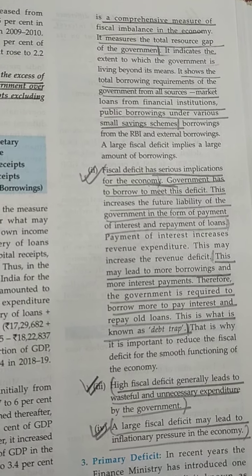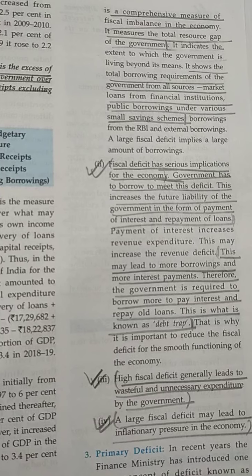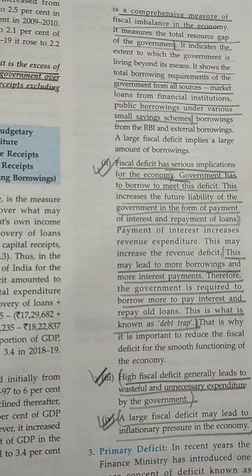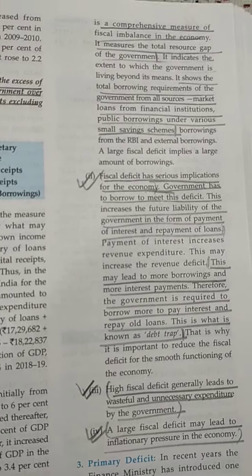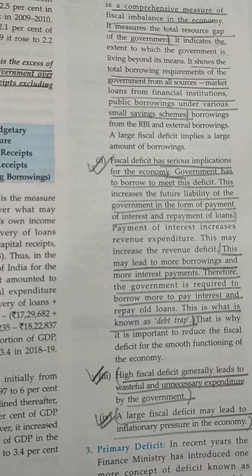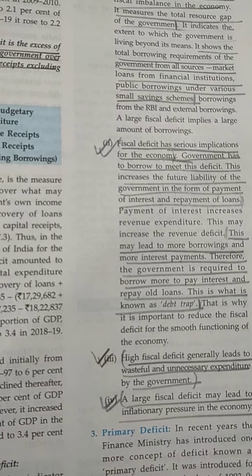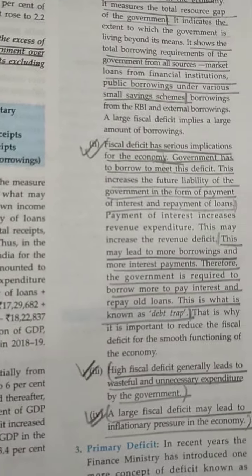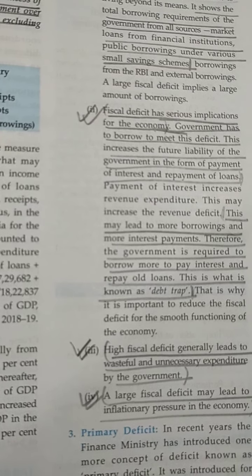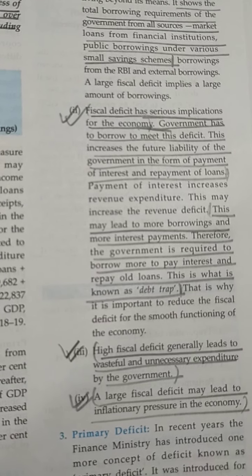The first implication of fiscal deficit is that it measures the total resource gap of the government. It shows that the government is borrowing a lot of money and indicates the various sources from where the government is borrowing. Fiscal deficit has serious implications — to meet the deficit, the government is going to borrow more and more money, and this will lead to a debt trap.